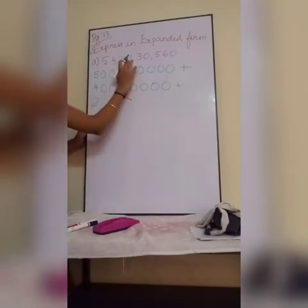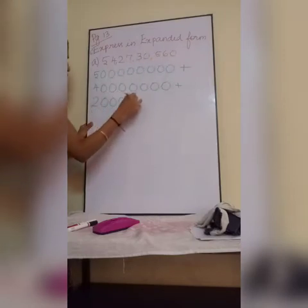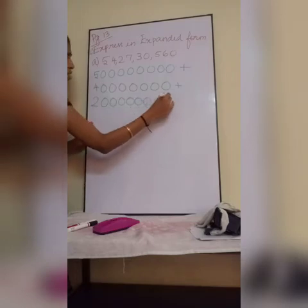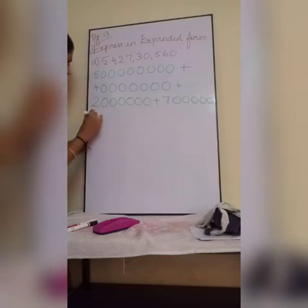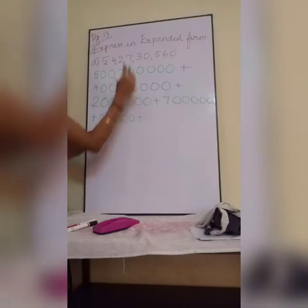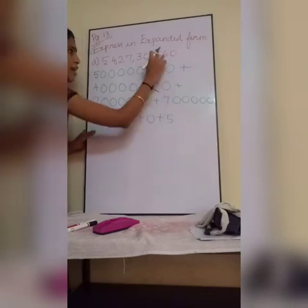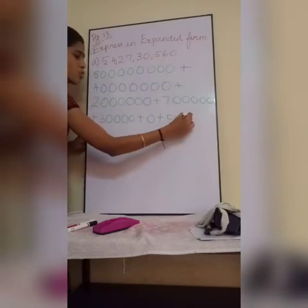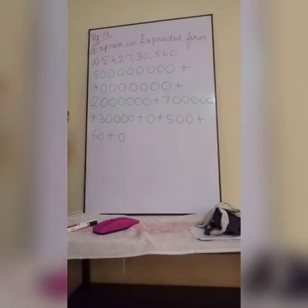Plus after that, 6 zeros. Plus after that, 6 zeros — 1, 2, 3, 4, 5, 6. Plus 7, with 5 zeros — 1, 2, 3, 4, 5. Plus after that 3, with 4 zeros — 1, 2, 3, 4. Plus 0, you will write 0 as such. After 0, 5 — after 5, 2 digits are there, so 2 zeros. Plus 6, then 0. Plus 0. This is how you will expand it.